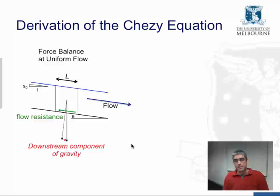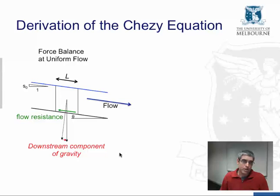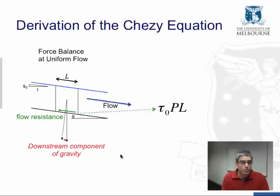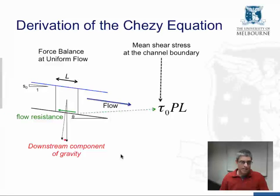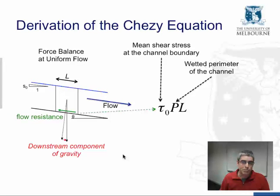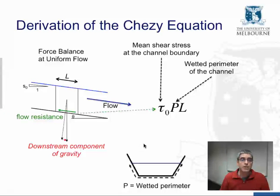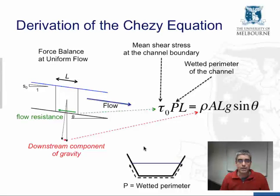We're going to express this force balance in mathematical terms. Considering a short section of the river channel of length L, we construct our force balance for this length. To calculate flow resistance, we use an expression giving flow resistance as the product of the mean shear stress acting at the boundary of the water volume — the boundary with the river channel — times the area over which that acts, which is the wetted perimeter times the length L.